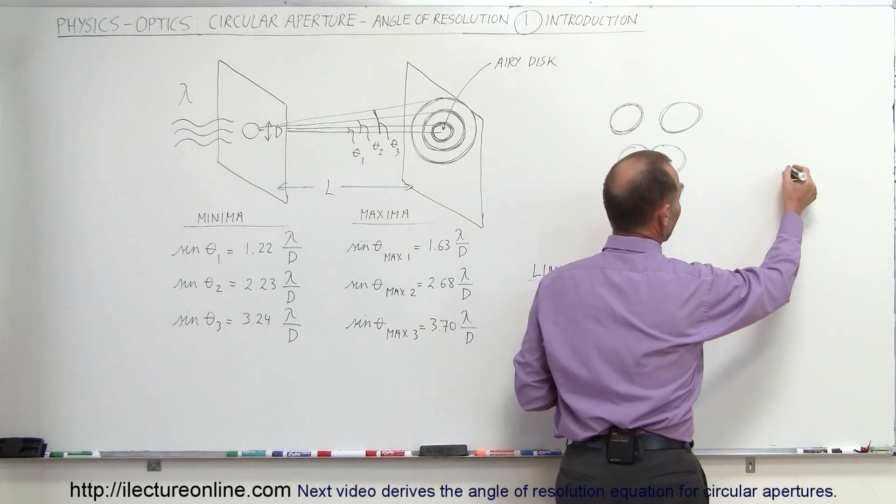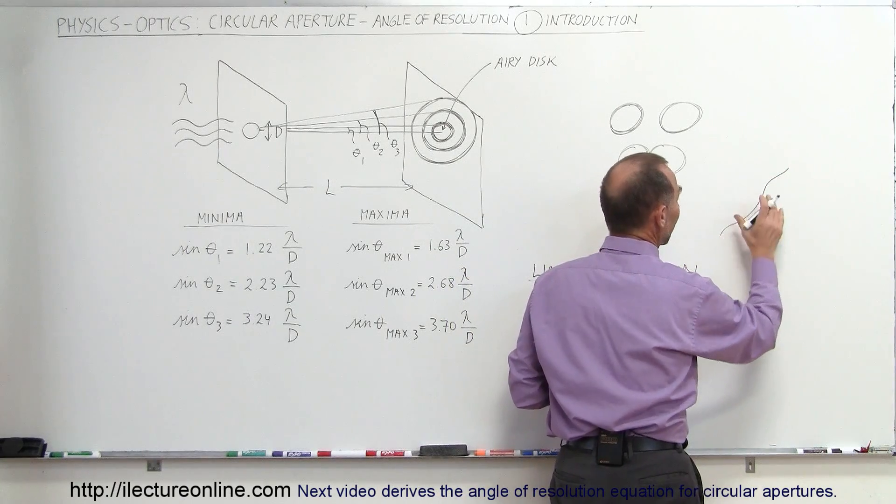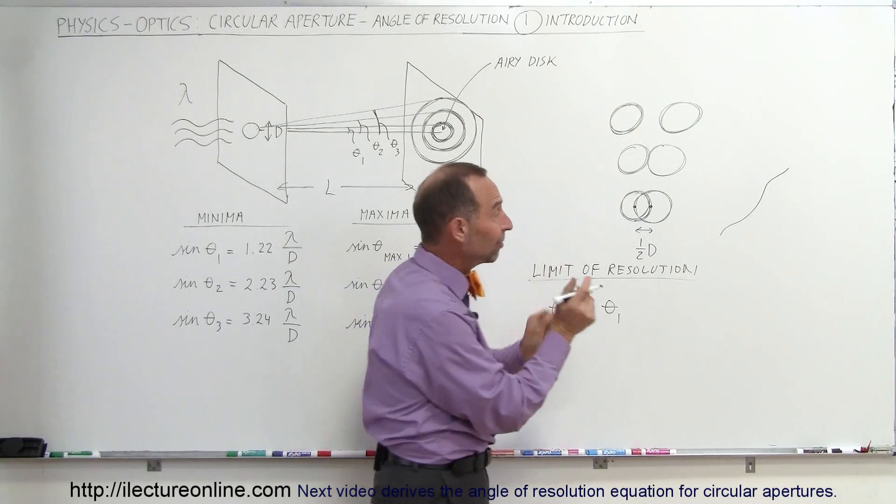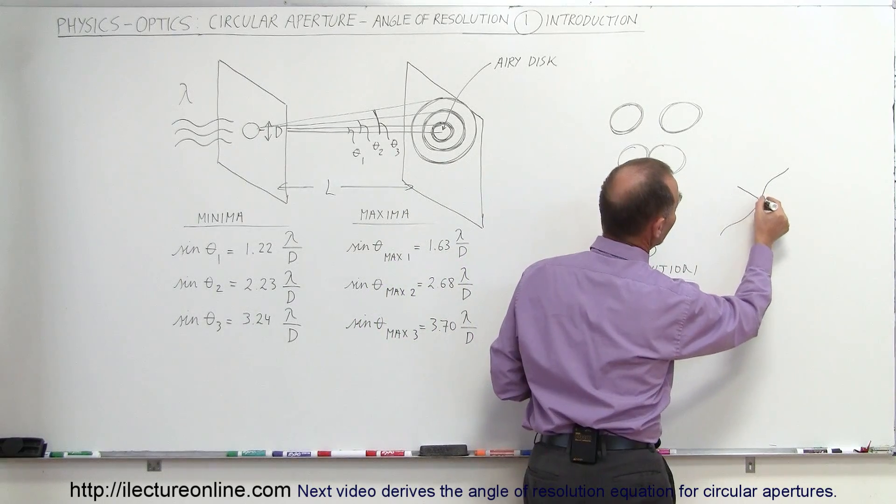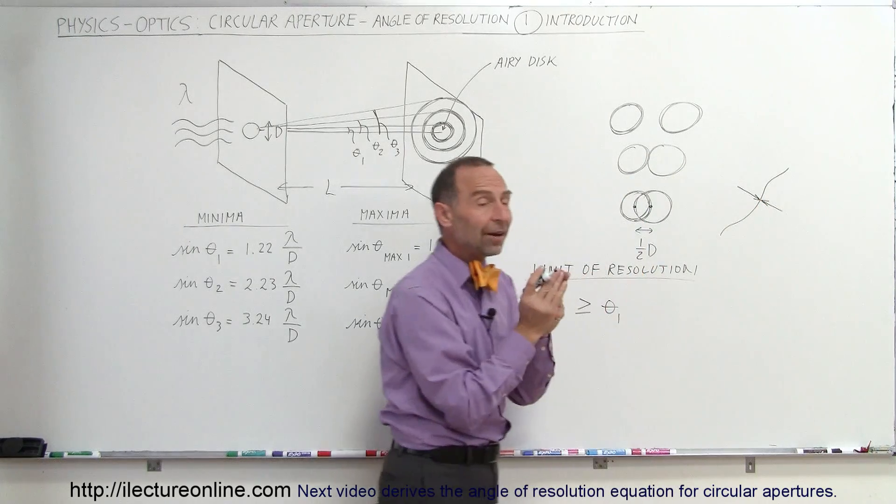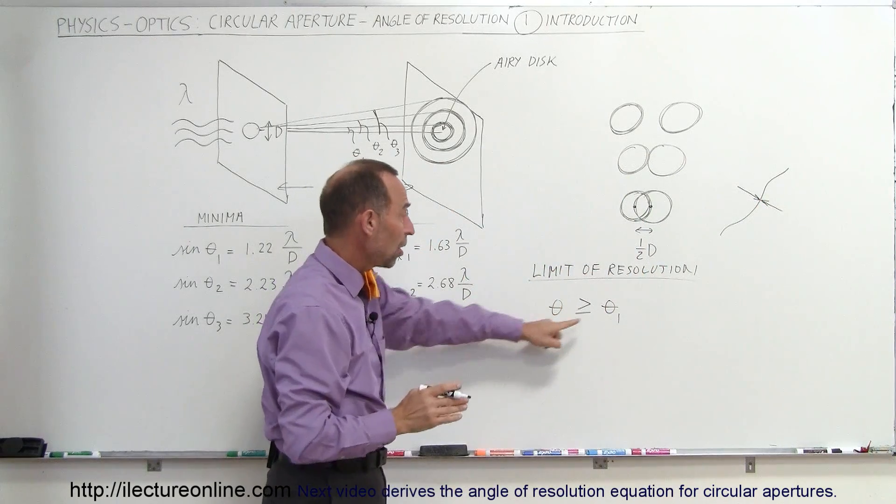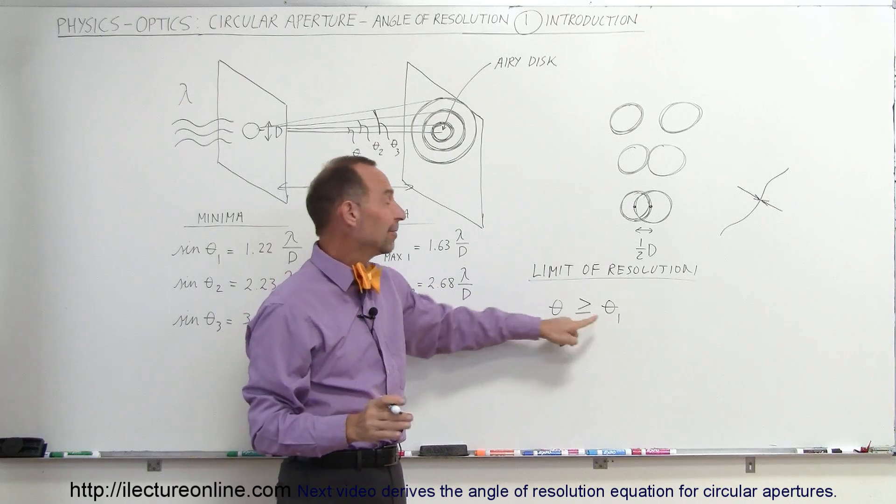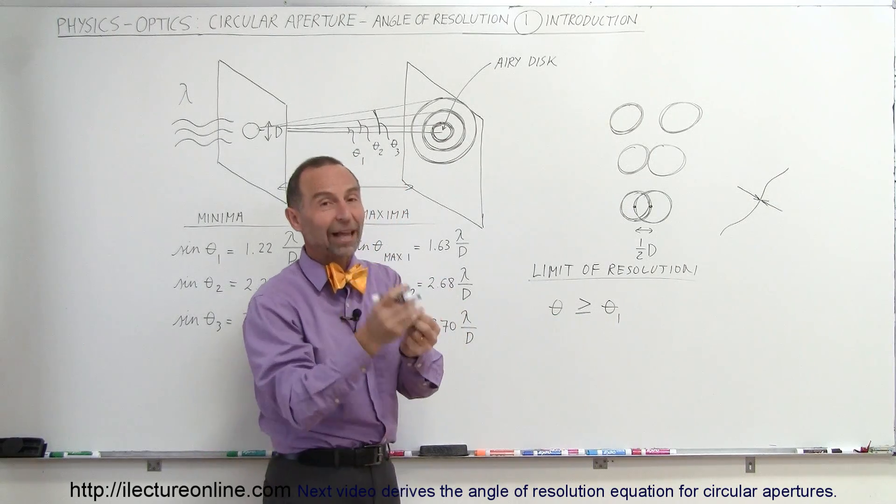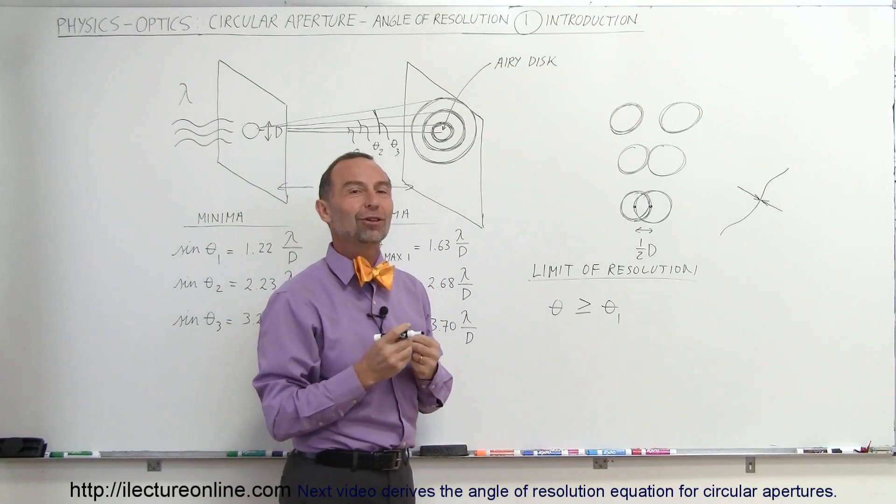if a small object, like let's say a human hair, can we see a human hair laying on the ground? Well, that depends upon the angle subtended from the two sides of that hair. If that angle is smaller than theta sub 1, we cannot see it. If the angle is bigger than theta sub 1, we can see it, of course, provided there's enough lighting and we have good vision and so forth.